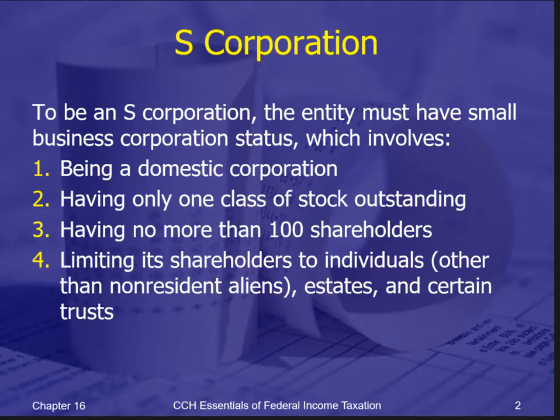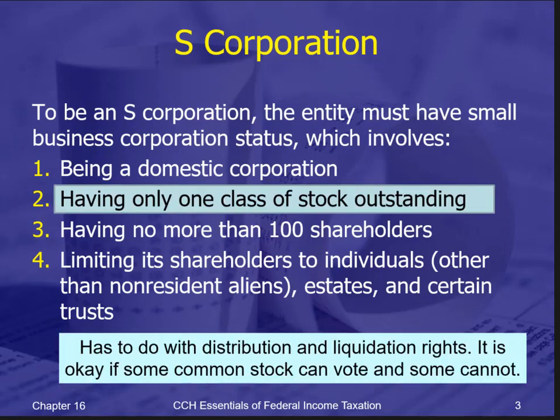To be an S-Corporation you have to follow these four characteristics: domestic, meaning inside the United States; one class of stock — no preferred or common stock distinction; no more than 100 shareholders; and shareholders are limited to a fairly limited group of individuals. It cannot be another corporation or a partnership. It can be an estate, certain trusts, and individuals — but not a non-resident alien. Also, there can be no different distribution or liquidation rights, though different voting rights are allowed.